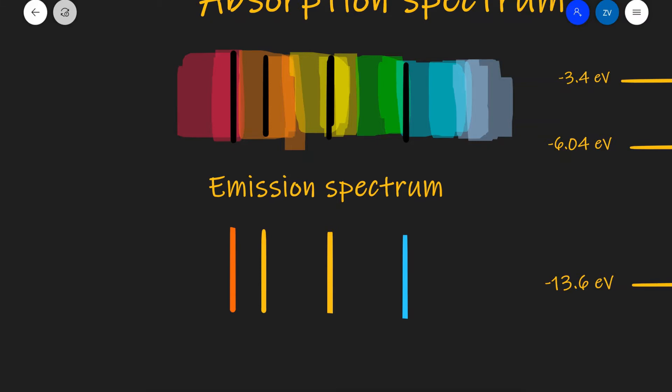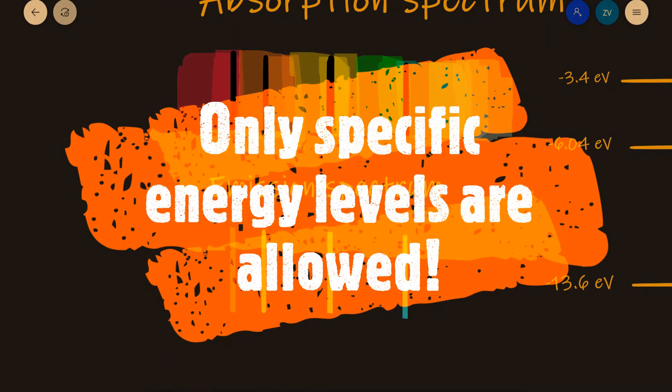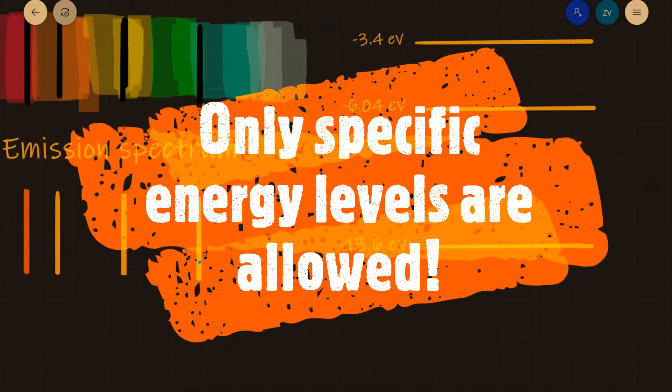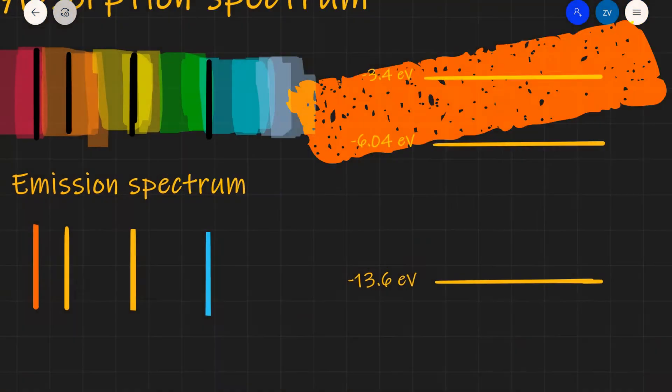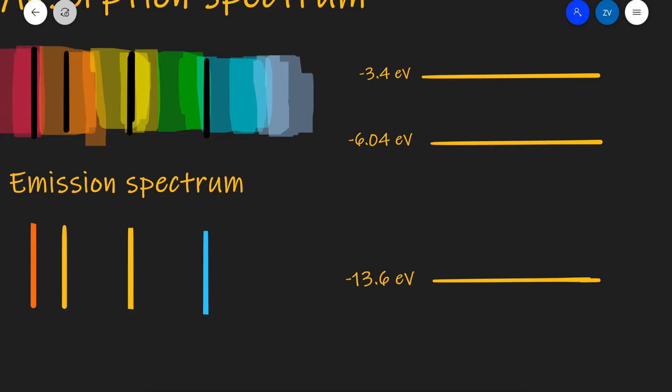In order to understand how these spectra are formed, we need to remind ourselves of the fact that electrons can only occupy specific energy levels. That means that only certain energy transitions are allowed.